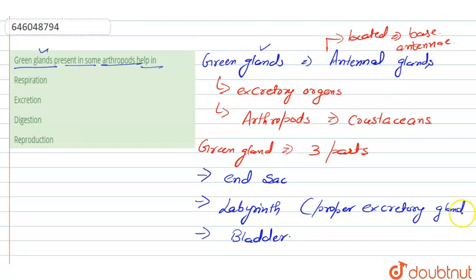The excretory part of this gland out of these three. So we can say that the green gland present in some arthropods helps in excretion, as it is an excretory organ. So the right answer for our question is option number two.